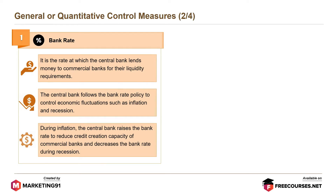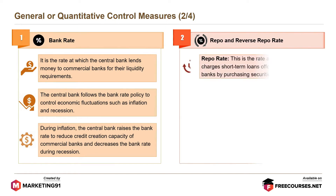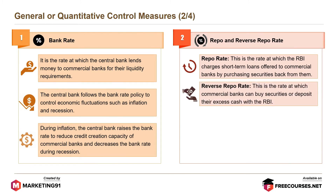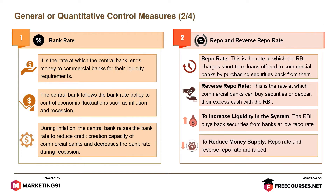The central bank decreases the bank rate during recession. Next is the repo and reverse repo rate. Repo rate is the rate at which the RBI charges short-term loans offered to commercial banks by purchasing securities back from them. Reverse repo rate is the rate at which commercial banks can buy securities or deposit their excess cash with the RBI. To increase liquidity in the system, the RBI buys back securities from banks at a low repo rate. To reduce money supply, repo rate and reverse repo rate are raised.